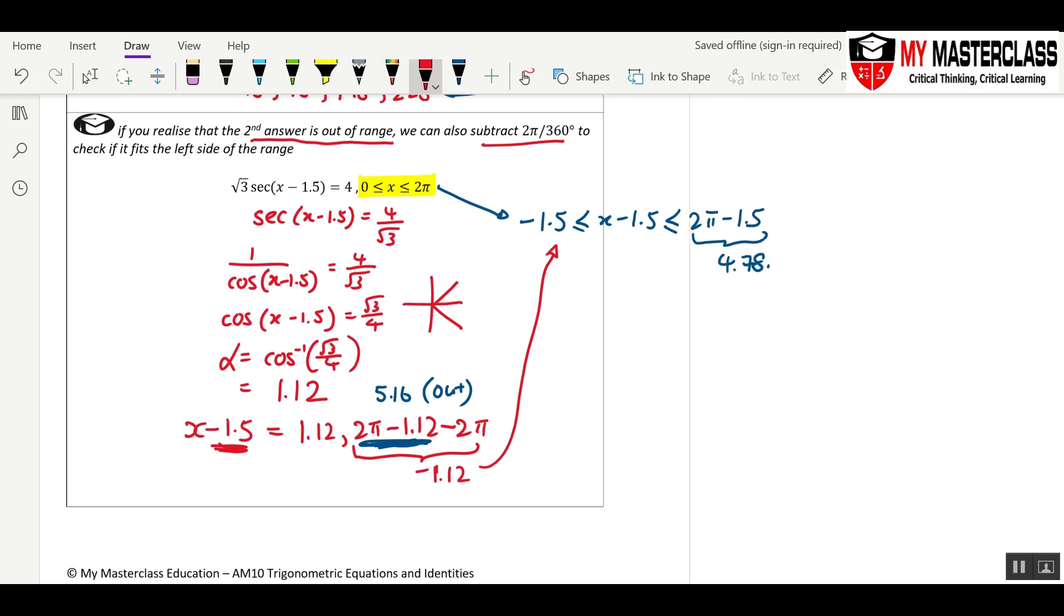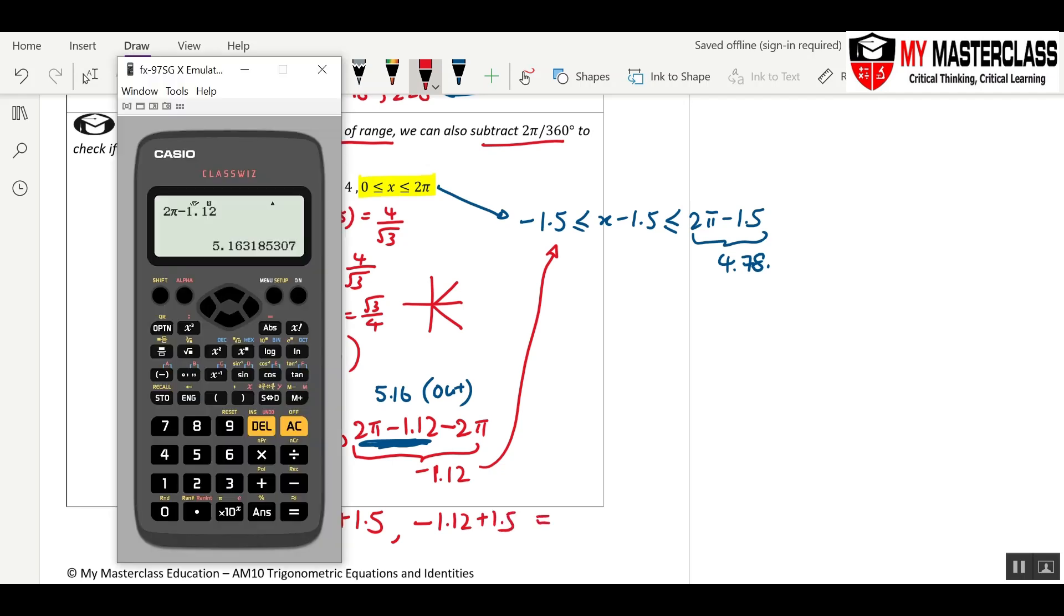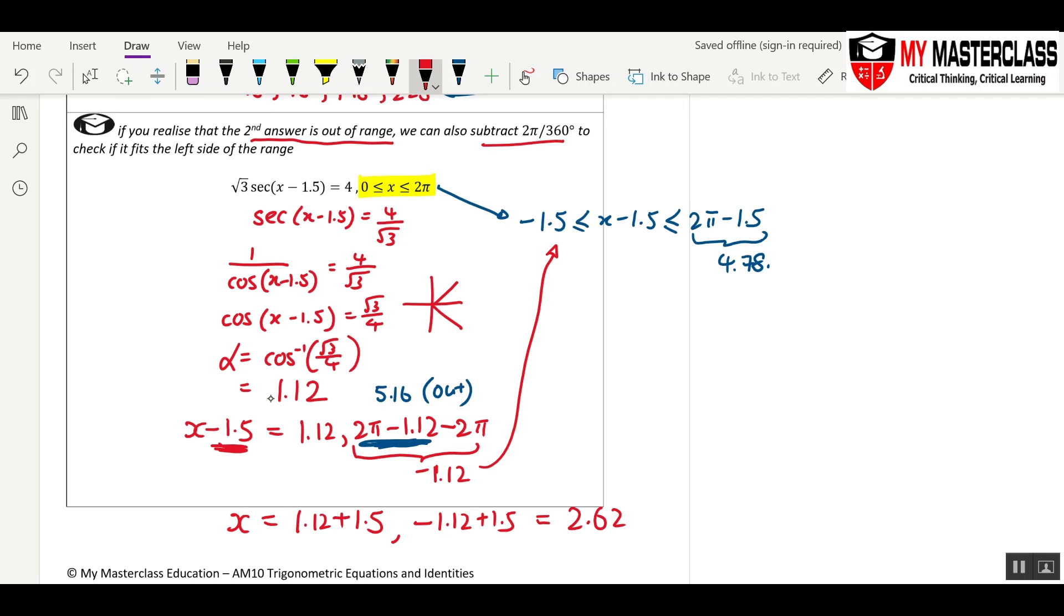So, your last step would be x equals 1.12 plus—I purposely write this now, I will use calculator to just calculate everything—comma, negative 1.12 plus 1.5. And that's how you get both answers. 1.12 plus 1.5 equals 2.62, and then the other one will be negative.